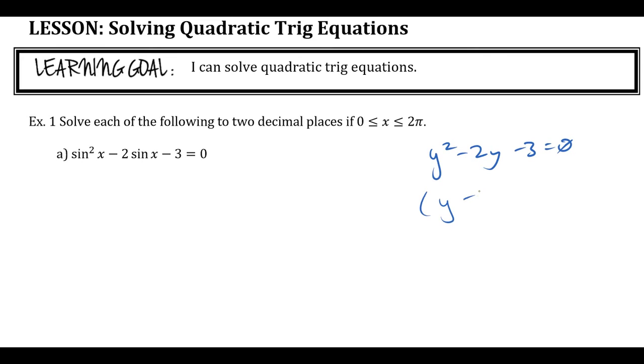I'd get y minus 3, y plus 1, right? So we're doing the same thing over here where I get sinx minus 3 and sinx plus 1 is 0. See the exact same idea, right? But it's a little bit trickier to think about it with the sinx. You just got to get used to it.